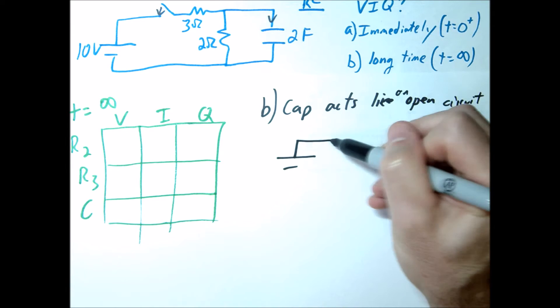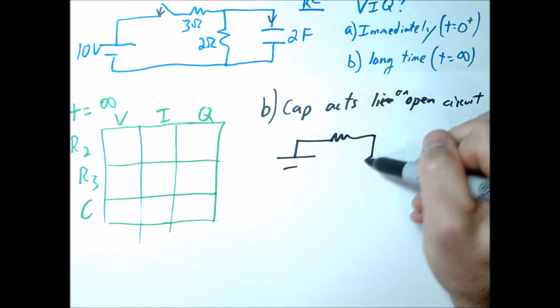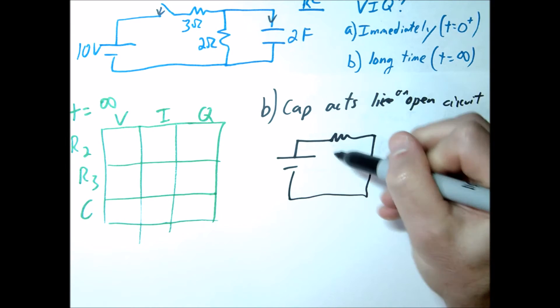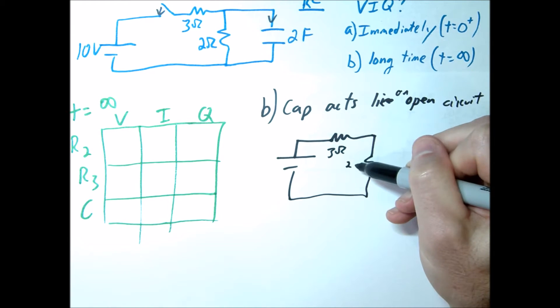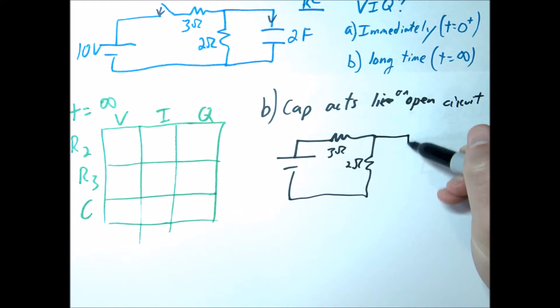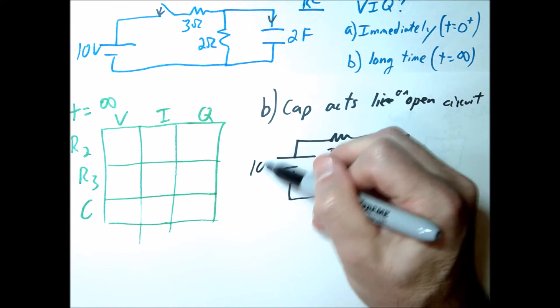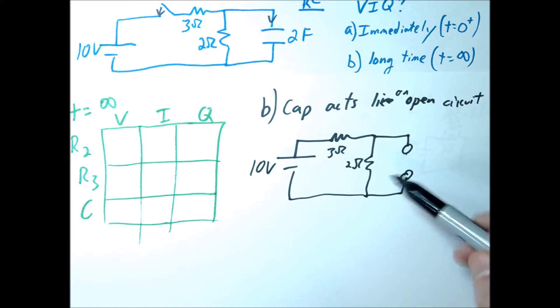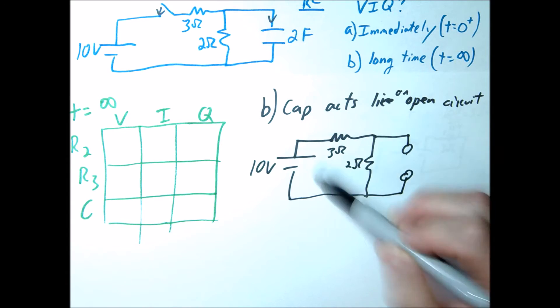So we're going to go like this. This is going to be 3. This is going to be 2. And I would encourage you to kind of redraw these circuits, especially when we start doing the more complicated ones. This is going to look like an open circuit here. And this is going to be 10 volts. So notice, effectively, this is just a nice series circuit of a 3 ohm and a 2 ohm resistor.